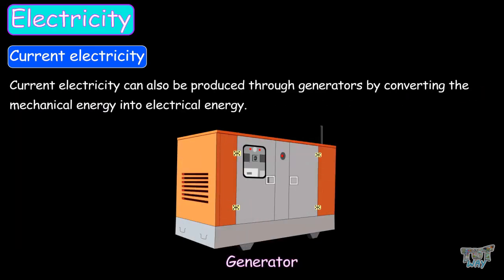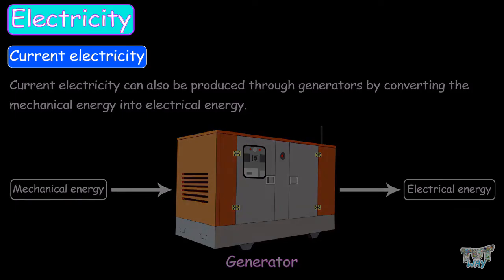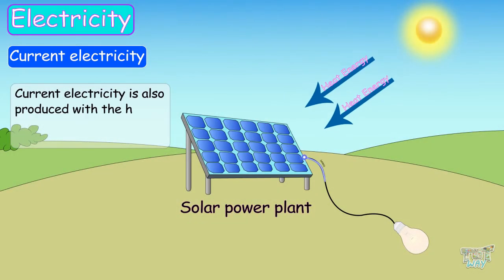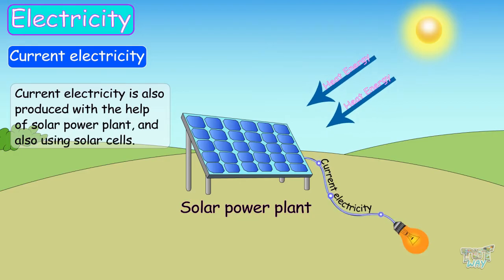Current electricity can also be produced through generators, by converting mechanical energy into electrical energy. Current electricity is also produced with the help of solar power plants and solar cells.